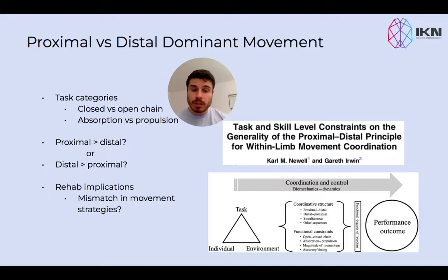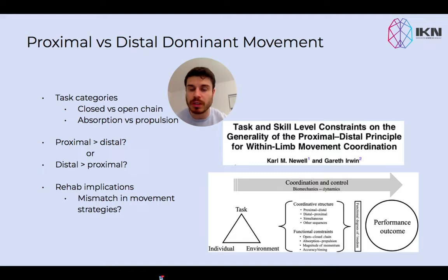The study mainly focuses on how our movement strategies are influenced by task constraints. But of course we also need to consider that someone's movement will be different within the context of the task constraints, and it will also be very different within the context of environmental constraints as well. So is the environment more predictable or more unpredictable? Are we moving in more of a closed-chain environment or an open-chain environment? Because this will have a big influence on the movement strategies that we express.